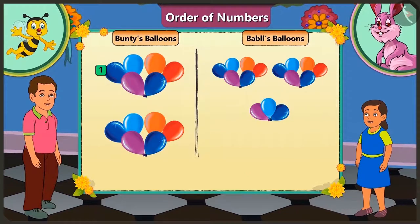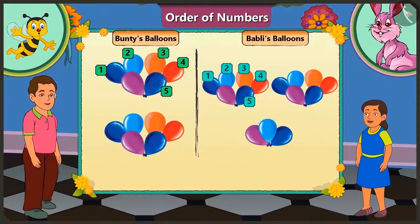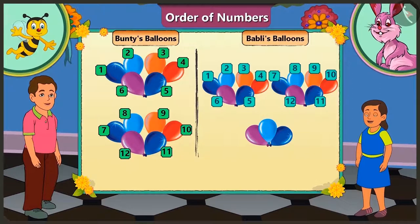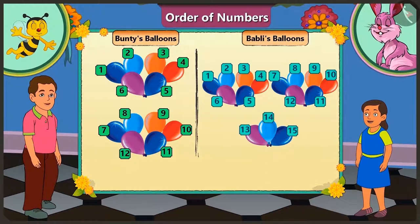Here is one balloon of Bunty's, here one of Bubbly's. Two balloons of Bunty and two balloons of Bubbly. Similarly, both of them have 3, 4, 5, 6, 7, 8, 9, 10, 11, 12. Bunty has 12 balloons and Bubbly too has 12 balloons. But Bunty is left with no more balloons, while Bubbly still has 3 balloons left. So we can say that Bubbly has 3 more balloons than Bunty — that is, she has 15 balloons.